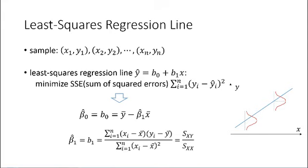If we do the minimization properly using calculus, we find that b0 is equal to the average of y minus beta1 hat times the average of x, and b1 is equal to the covariance between x and y divided by the variance of x. Professor Chen has spent a lot of time showing how to derive these formulas in the lectures, so I will omit the details here. These are estimates of parameters beta0 and beta1 based on sample data. Next, let's see the distribution of the parameters.